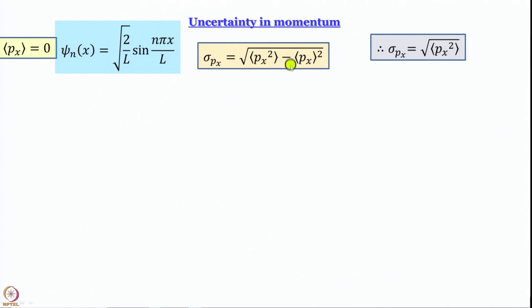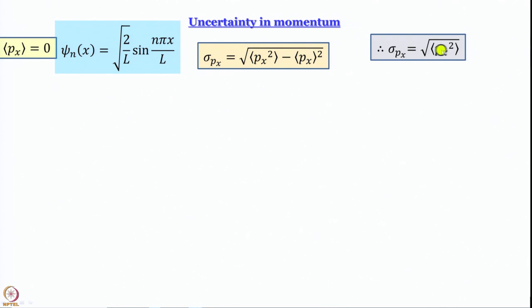So the expression becomes a little simpler — it turns out to be the square root of the average value of p_x². Please do not think that the square root and the square will cancel each other to give the average value of p_x; they will not. Remember the task from the last module: take a set of numbers, work out the average of their squares, then separately square the average — you will see they are not the same. This is a root mean square quantity, analogous to the root mean square velocity we studied in kinetic theory.